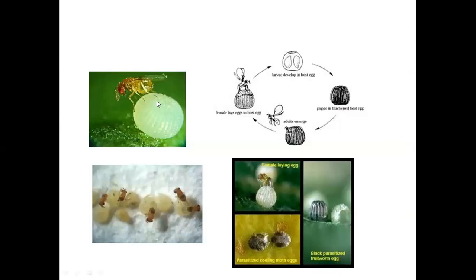Trichogramma chilonis is an egg parasitoid. Natural enemies are divided into two types: parasitoids and predators. Parasitoids require only one host to complete the life cycle, whereas predators require many prey. Among parasitoids, there are egg parasitoids, larval parasitoids, pupal parasitoids, and nymphal/adult parasitoids. Trichogramma chilonis is an egg parasitoid that is one of the successful biocontrol agents to control sugarcane borers. The adult parasitoid lays eggs inside the pest egg; the parasitoid egg hatches and feeds on the embryonic portion of the pest, so the pest larva never emerges from the egg.